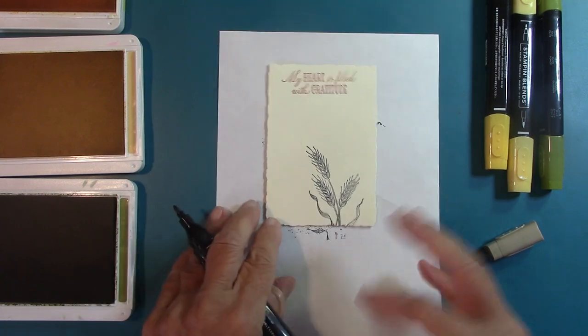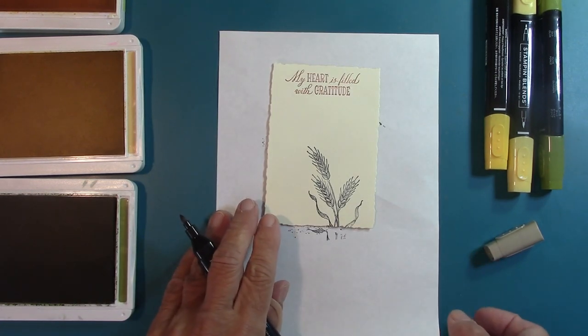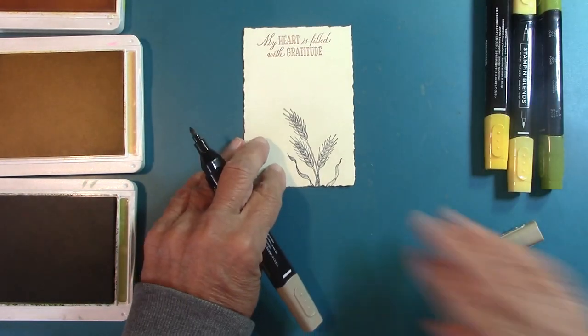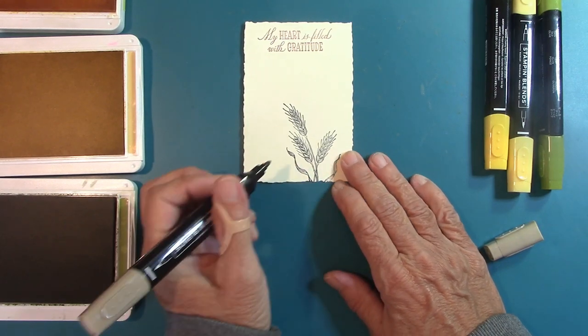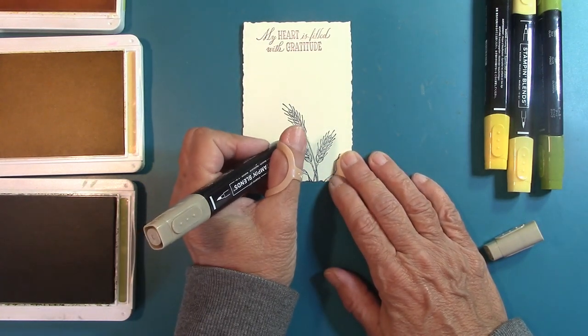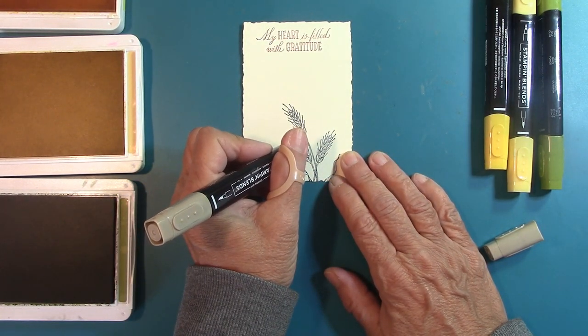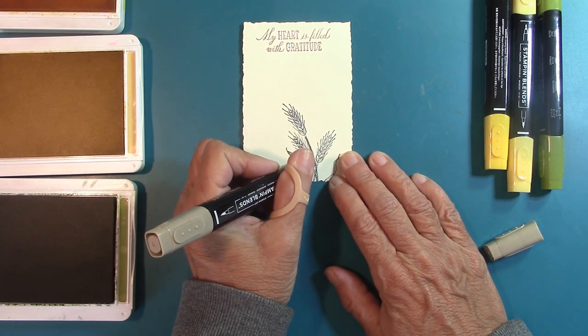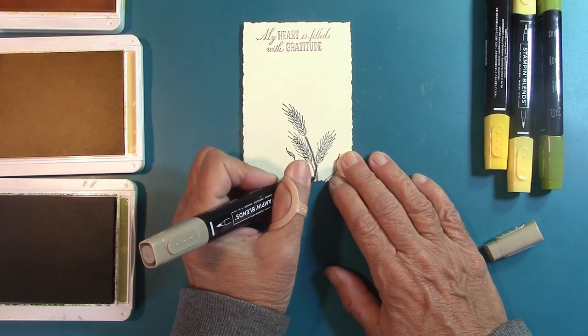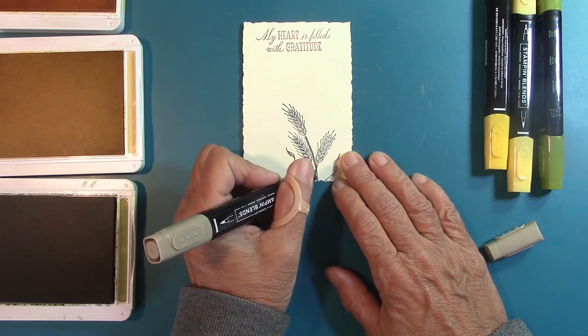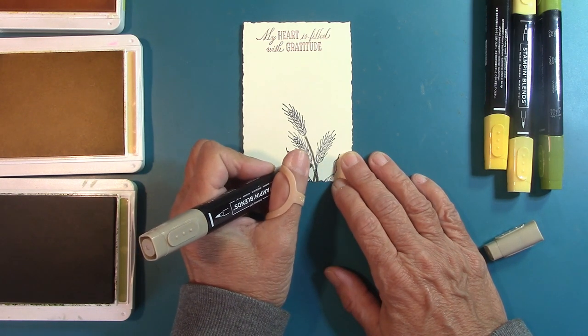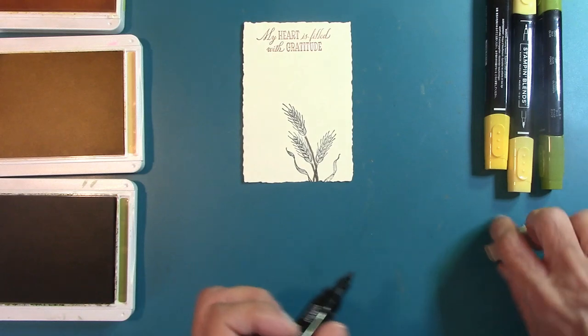And I'm going to just color the, let me get this out of here, we don't need this. I'm just going to color the stem, right here. And I'm using that little bullet point, or nib tip, very gingerly. And I don't have steady hands, guys. So, there we go. Just like that.